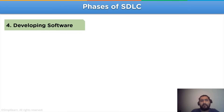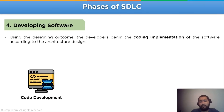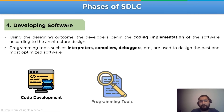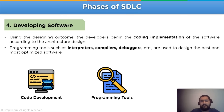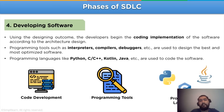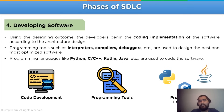Let's take a look at the fourth step of SDLC: developing software. Using the designing outcome from the previous step, the developers begin the coding implementation in accordance with the architecture design. Programming tools such as interpreters, compilers, and debuggers are used to design the best and most organized software. It is developed using multiple languages, for example Python, Kotlin, Java, and C.